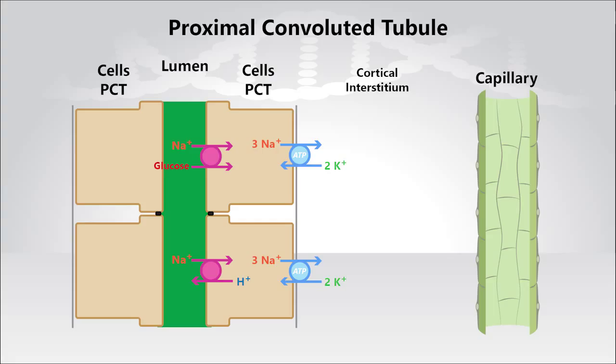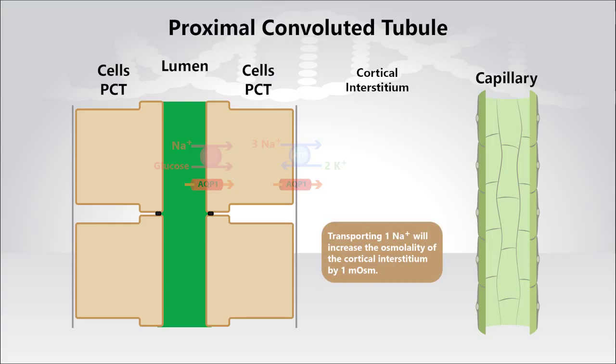Now without the sodium-potassium ATPase, sodium would not be reabsorbed from the ultrafiltrate, and thus water reabsorption would not occur. So, the net effect of transporting one sodium ion from the ultrafiltrate into the cortical interstitium via these pathways that we just talked about will lower the osmolality of the ultrafiltrate by one milliosmol, in other words, from 300 to 299 milliosmols, while it will increase the osmolality of the cortical interstitium from 300 to 301 milliosmols.